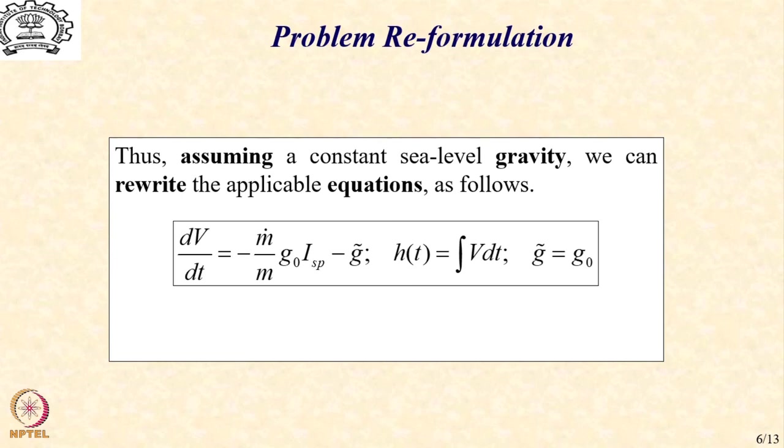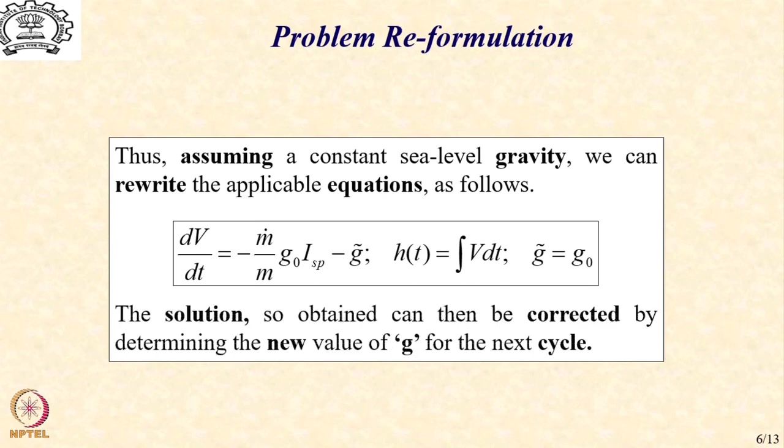We will note now that in comparison to the ideal burnout solution, we will now get a solution for altitude or distance travelled depending upon the velocity solution. As I have mentioned earlier, the solution so obtained can then be corrected by determining the new value of g̃ for the next cycle as we will see through an example next.